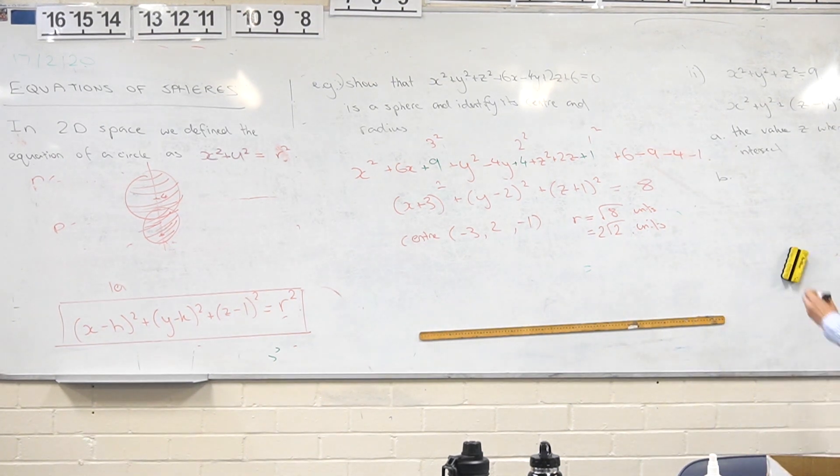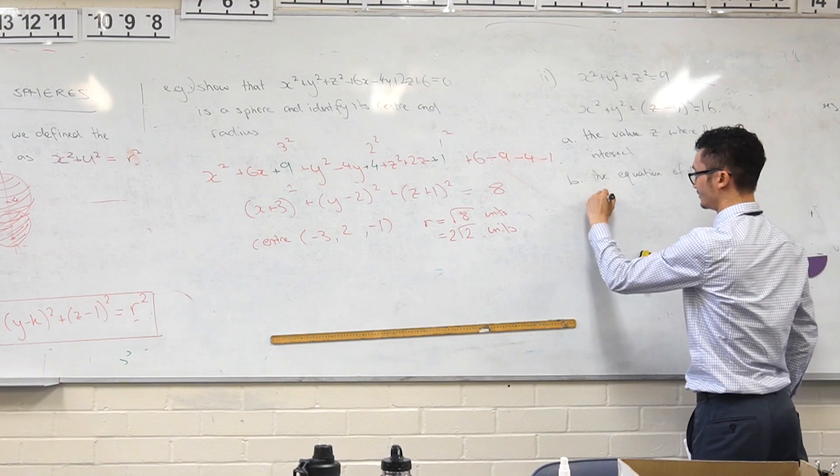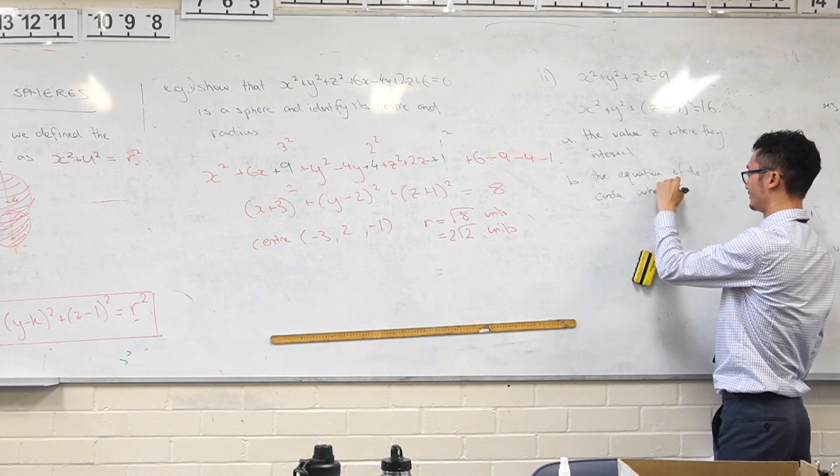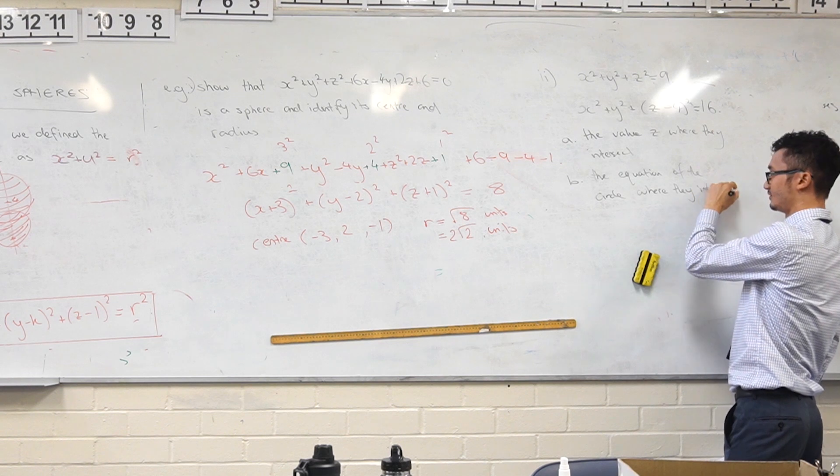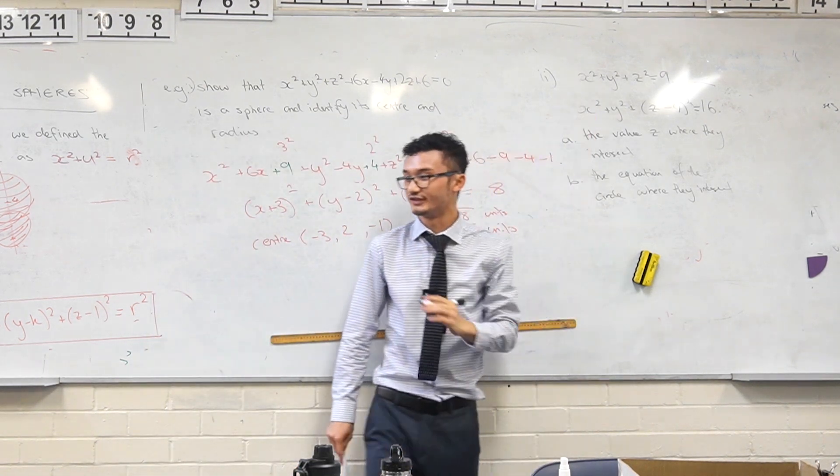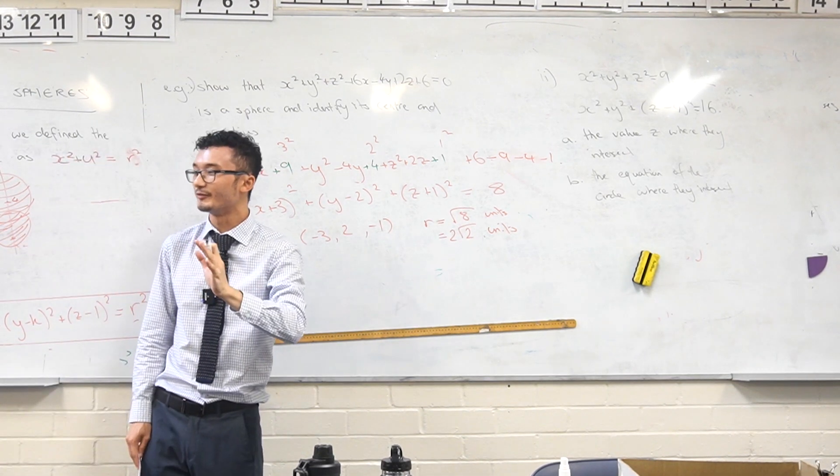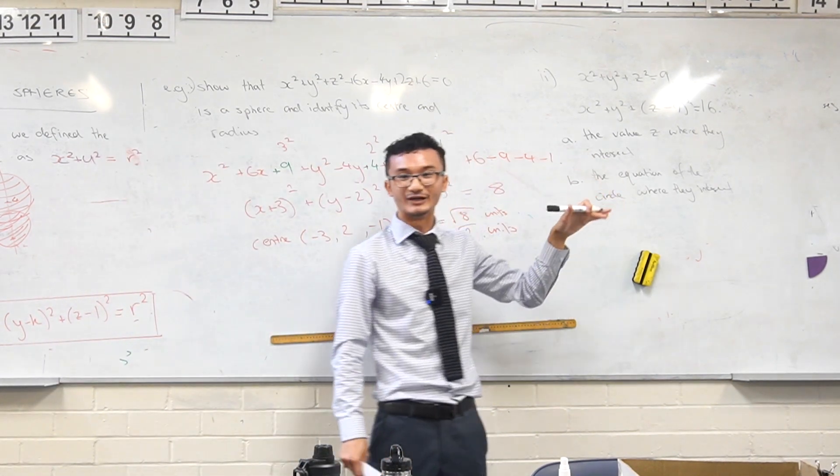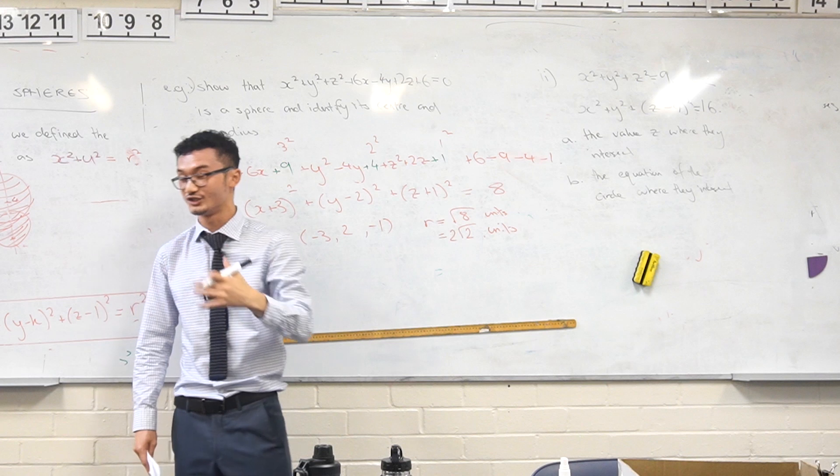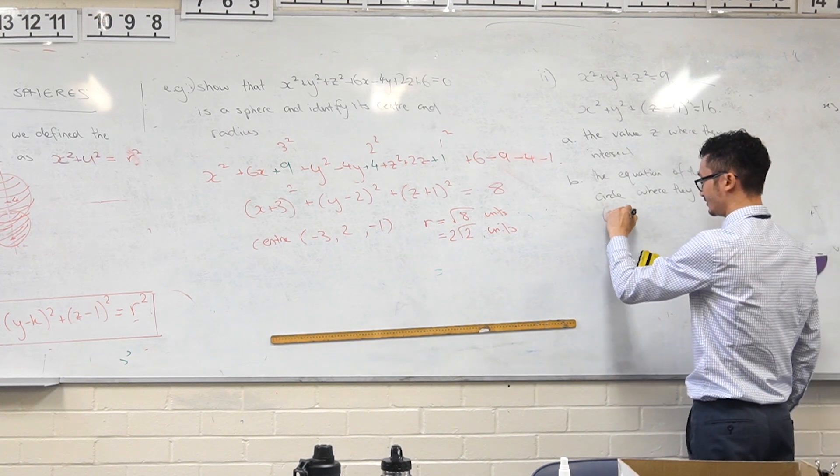So the question is the equation of the circle where they intersect. The x and y coordinates aren't shifted at all because they're literally on top of each other. It's only a z value I'm looking for. So part A, the z value where they intersect, and then the equation of the circle with center and radius.